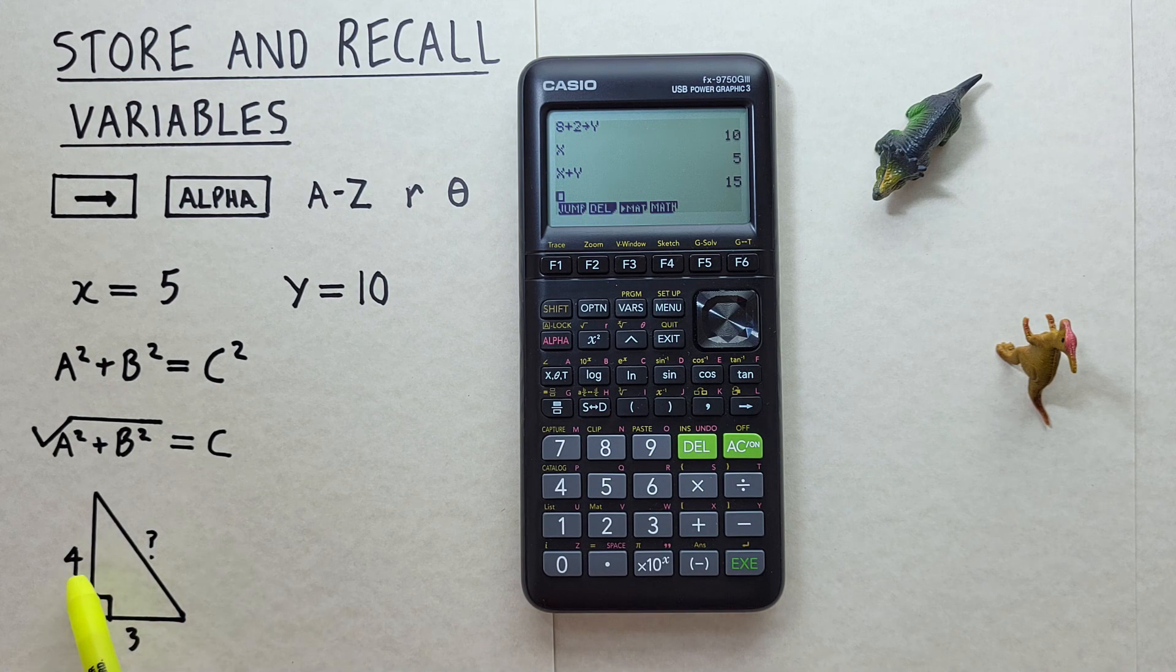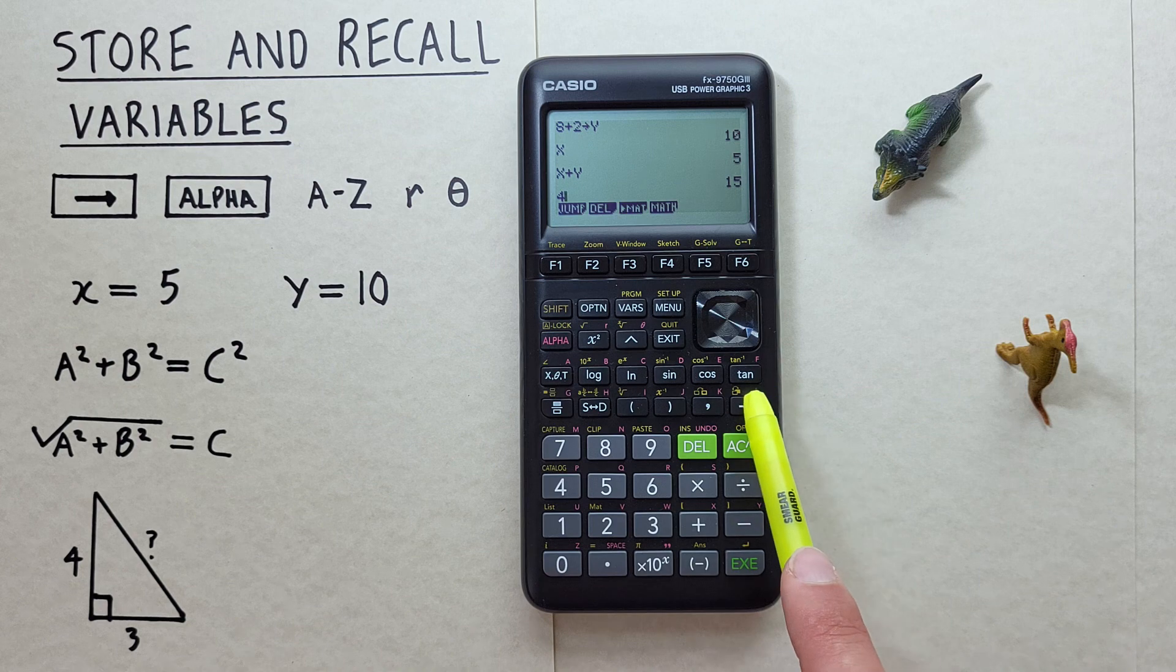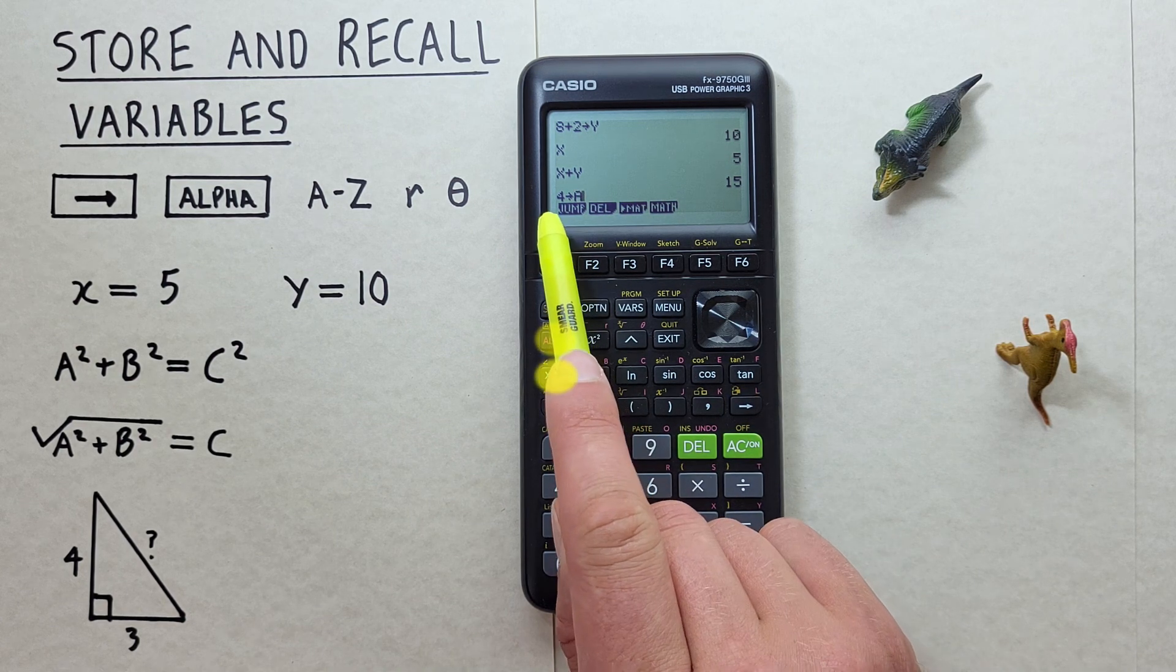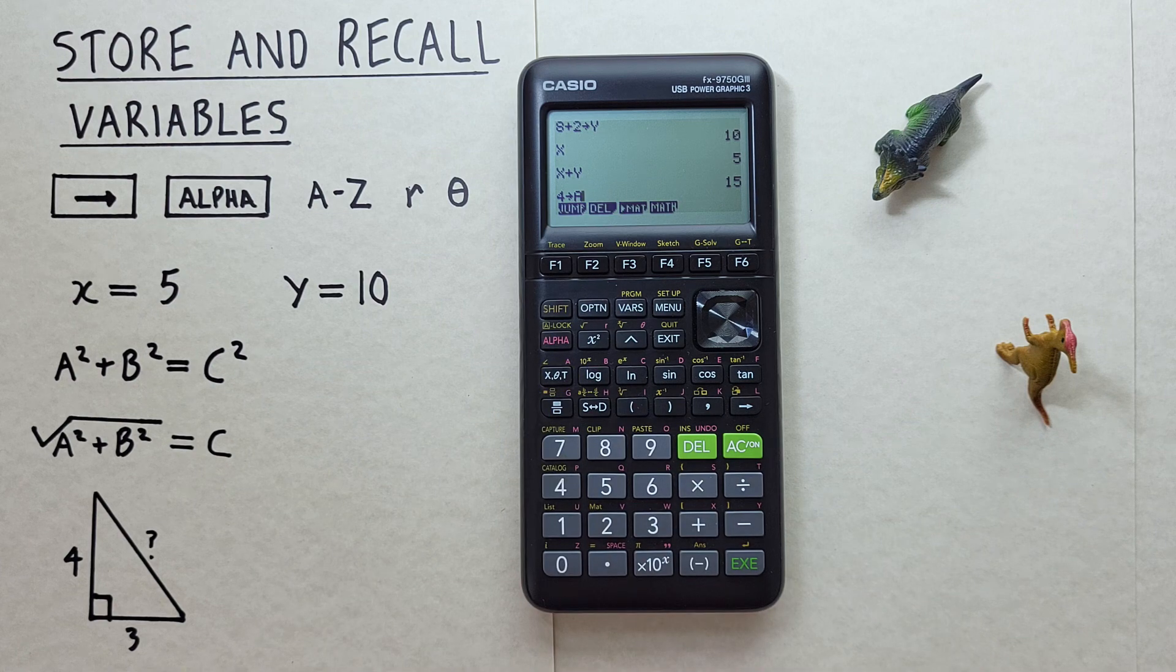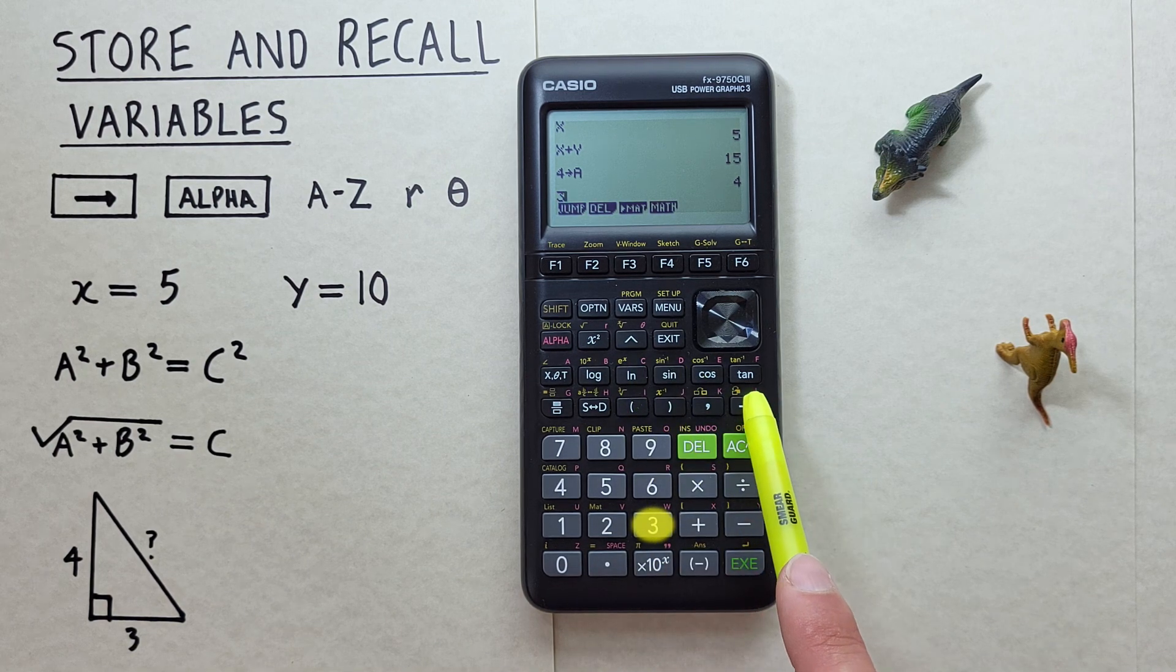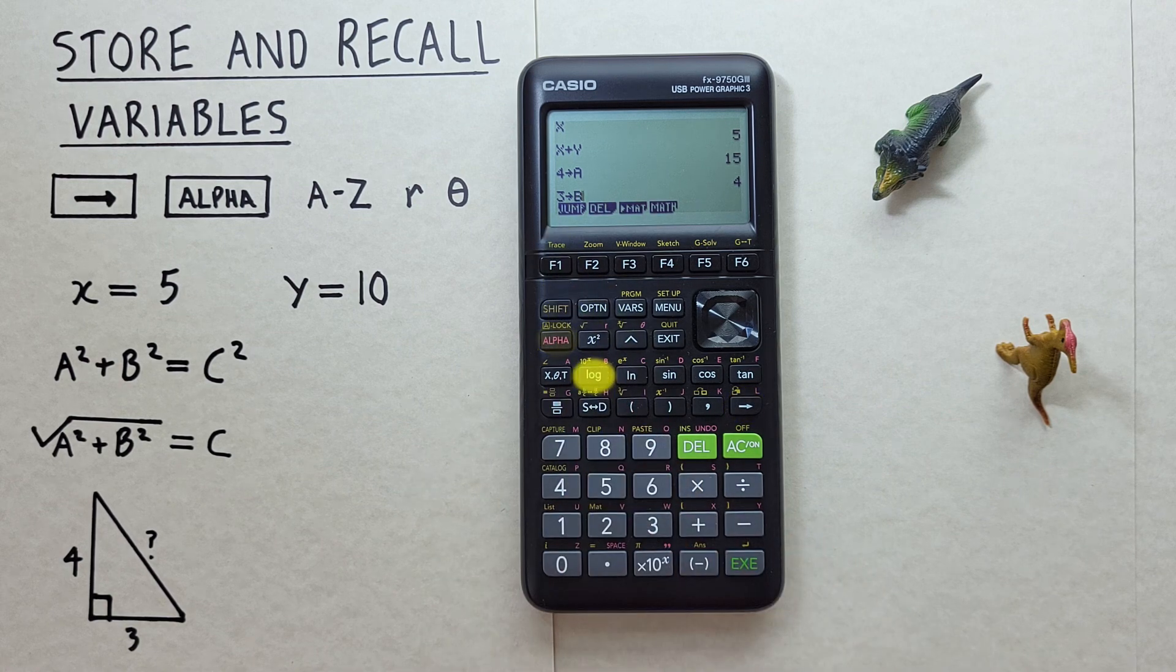So we'll store 4 as A. We put our 4 on the screen, hit the arrow key, and then alpha A, there's our 4 into A, EXE, and then 3 into B. So we'll place 3 on the screen, arrow, alpha B, 3 into B.